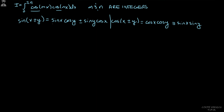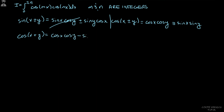Since we have cosine times cosine in our integral, we notice that the second identity — cosine of x plus or minus y — actually contains a cosine times a cosine. So by default we'll use that second trig identity. Let's not pick a specific sign yet; let's just start with cosine of x plus y, which equals cosine x cosine y minus sine x sine y. Then we solve for cosine x cosine y.